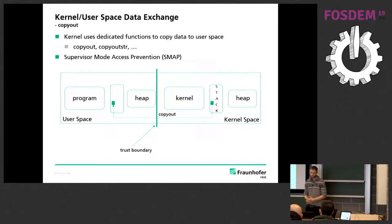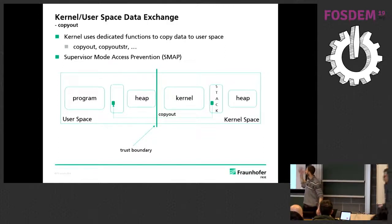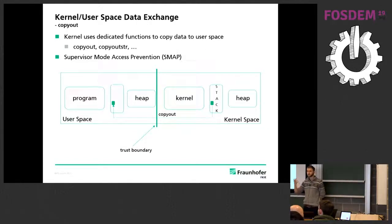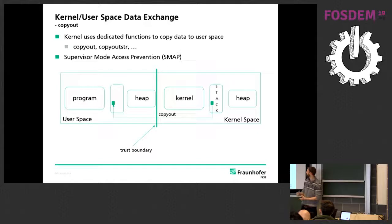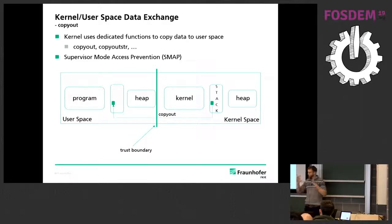The really interesting thing — which is what this talk is all about — is copyout: getting data out safely and securely from kernel space. Typically there are dedicated functions like copyout and copyout_string to get this data to the user-mode program. The kernel does not typically write directly into user space; it uses these APIs also because of things like Supervisor Mode Access Prevention, which is an exploit mitigation. If you know what a syscall is and you know about the trust boundary, you can follow this talk perfectly.